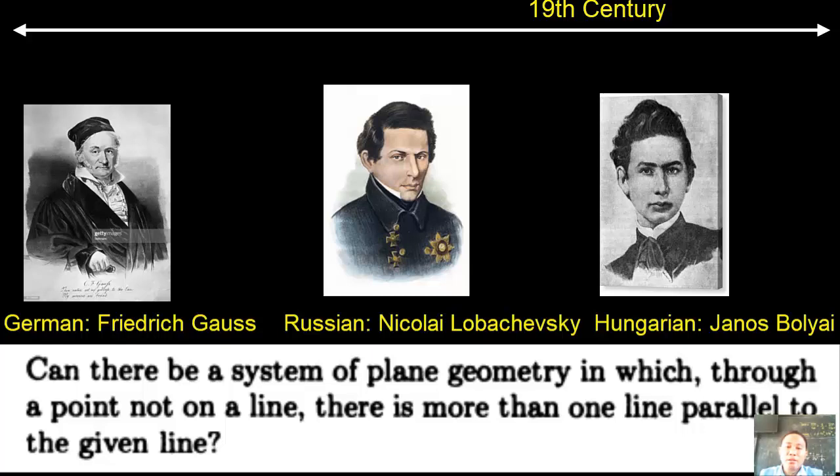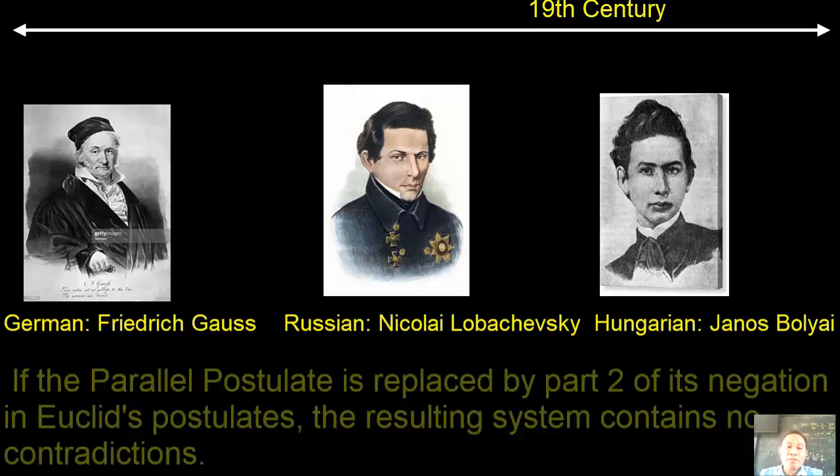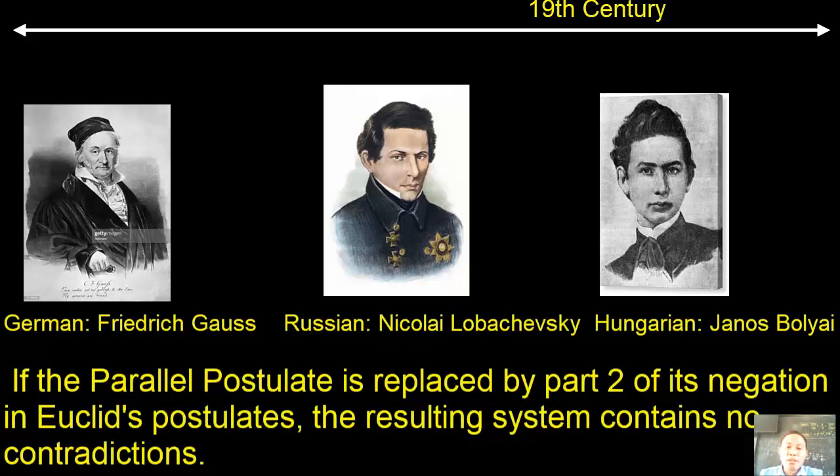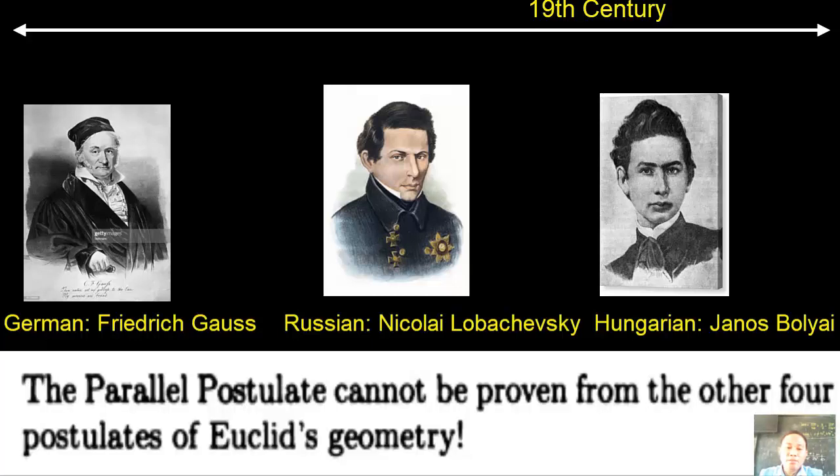Through a point not on a line, there is more than one line parallel to the given line. The resulting system contains no contradiction. Hence, the parallel postulate cannot be proven from the other four postulates of Euclid's geometry.